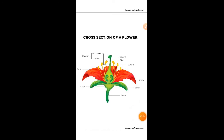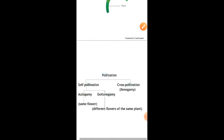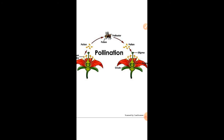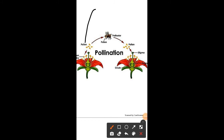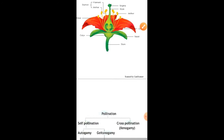For the process of pollination, pollen grains are important. The pollen grains are transferred from the anther and deposited on the stigma, and this process is called pollination. As you can see in the diagram, these pollen grains are deposited on the stigma — this is the definition of pollination.